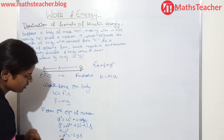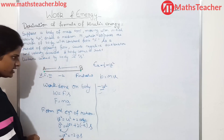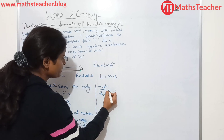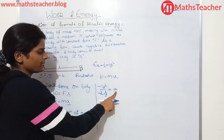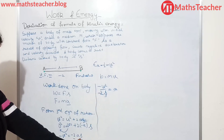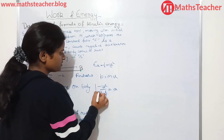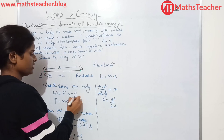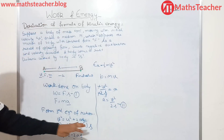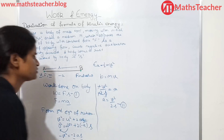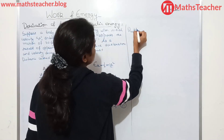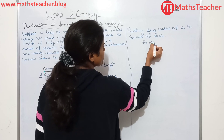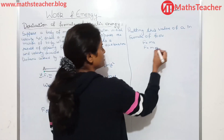Now we will put this acceleration value into the formula of force: F = MA. So F = M × (V²/2S). Then we put this value of force into the work done equation — equation 1: W = F × S. So W = M × (V²/2S) × S. The S cancels out, giving work done = MV²/2, which we write as half mv².